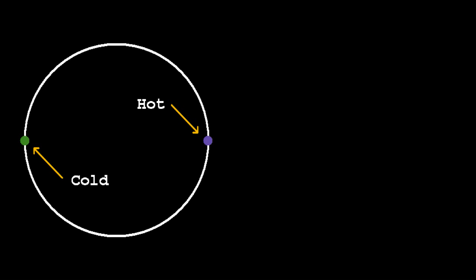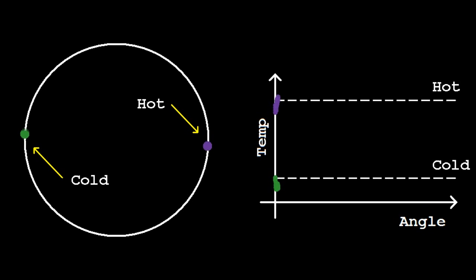Now consider the two points moving along the circle while maintaining opposite positions. As the points move around the circle, imagine what would happen if they never shared the same temperature.